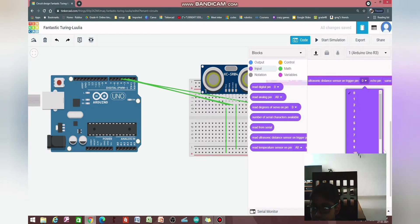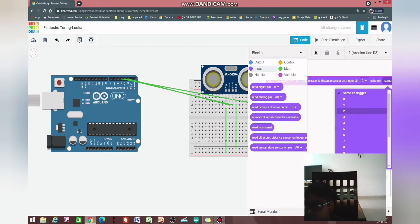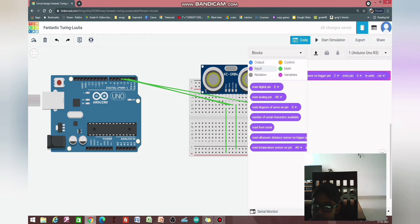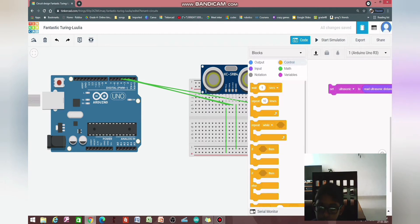should be connected to pin 4. Then, trigger pin 2, echo pin 3. Then, the code, click variables, ultrasonic. Then, input, read ultrasonic sensor.